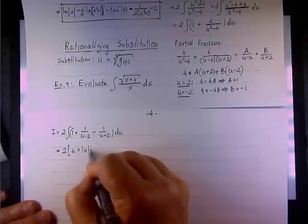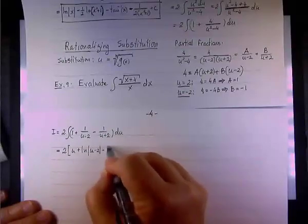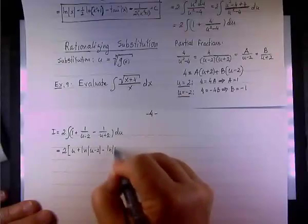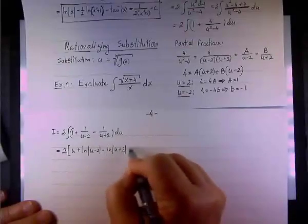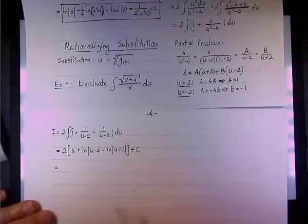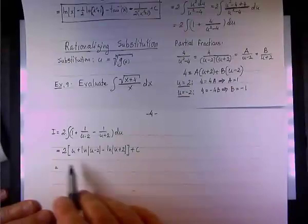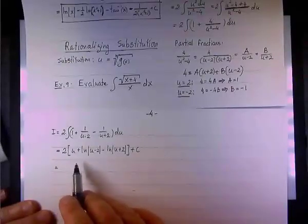So, 2. And now we take the antiderivative. And of course, we have u. And here we have the natural log of u minus 2.